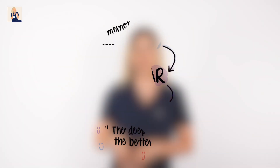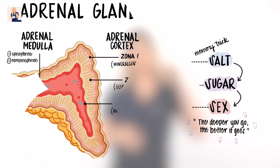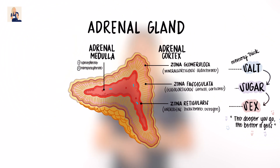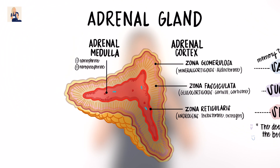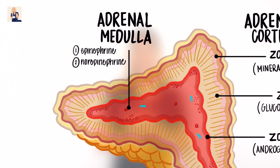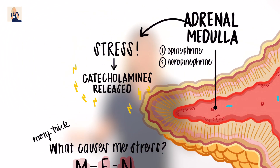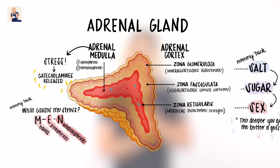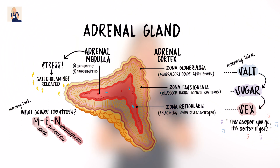We can narrow down the hormones the adrenal glands produce by using the saying 'salt, sugar, sex — the deeper you go, the better it gets.' This shows that as you move down the layers of the adrenal cortex, steroid hormones that control salt, sugar, and sex are produced. The innermost layer, the adrenal medulla, secretes epinephrine and norepinephrine in response to stress.